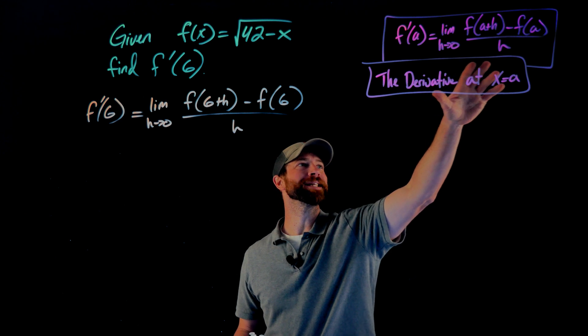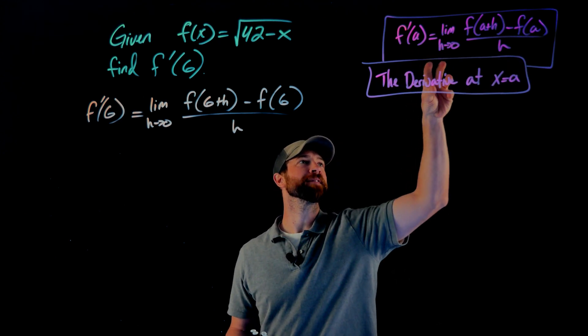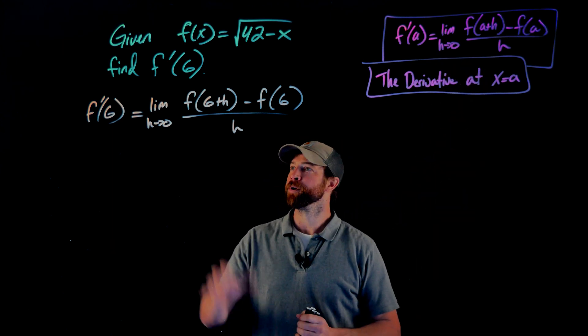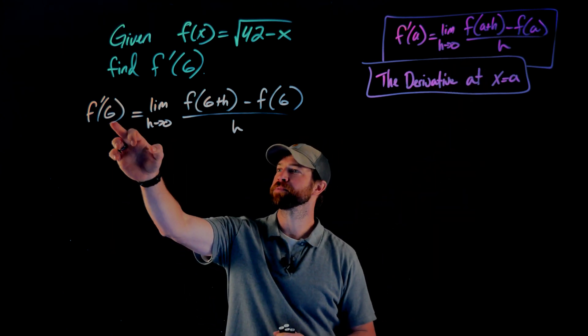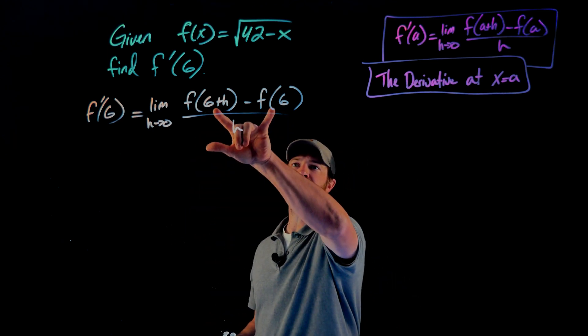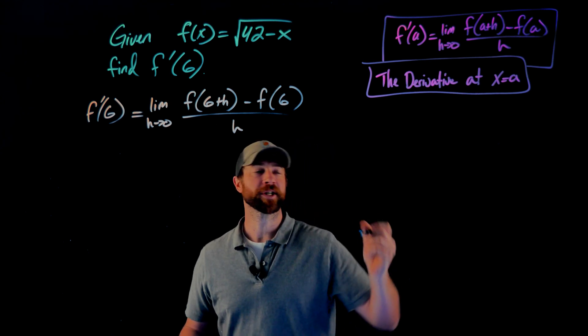In this video, I'm gonna be using the h version of the definition of a limit as h goes to zero of f of a plus h minus f of a all over h. First thing I've done is set this up. I've just plugged in six for my a value here. What I like to do is to evaluate this stuff in the numerator separately. So let's look at this real fast.